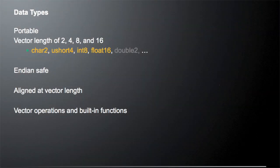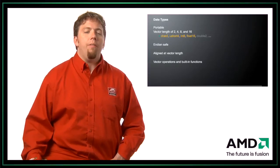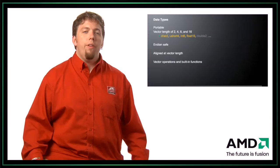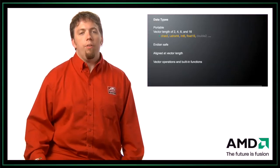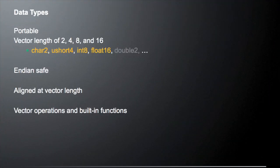Vector types are designed to be portable, so no matter what runtime you're running on, if you use a certain vector type it'll be portable across different runtimes. OpenCL requires that vector types have certain characteristics. The vector lengths you can have are 2, 4, 8, and 16. The data types are endian-safe, so if you write code using these vectors and go between the GPU, CPU, or a DSP, you know the same code will work without doing endian conversions. They are aligned at vector length, and the vector operations have built-in functions guaranteed with the OpenCL 1.0 runtime.